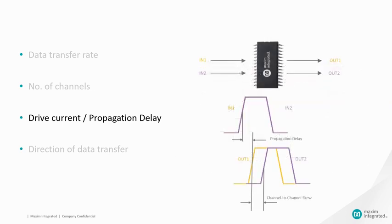Another important parameter is channel-to-channel skew, which is the difference in propagation delays between channel outputs. For SPI, for example, if the channel-to-channel skew is large and the SPI clock rate is fast, the MOSI and clock signals may be misaligned on the slave side. If the propagation delay is large, the MISO data line and clock signals may be misaligned on the master side.